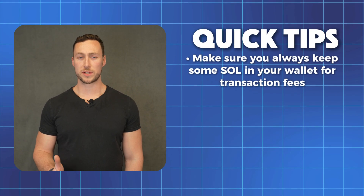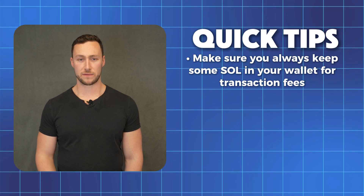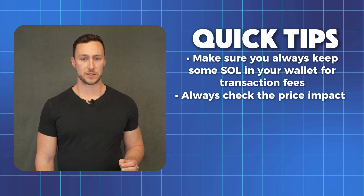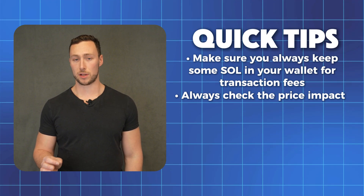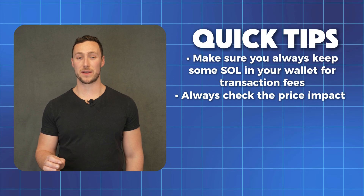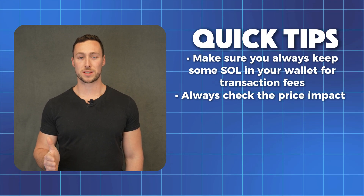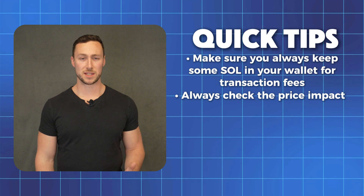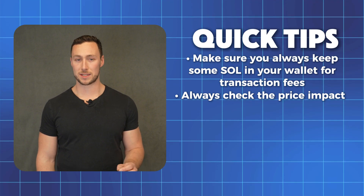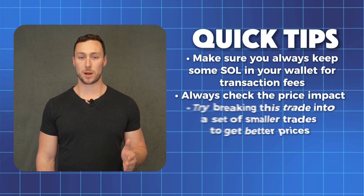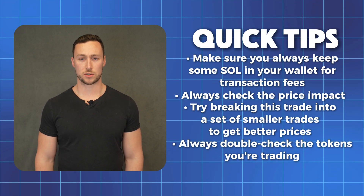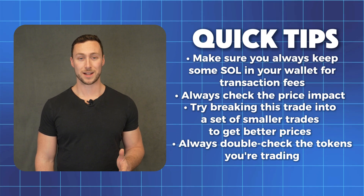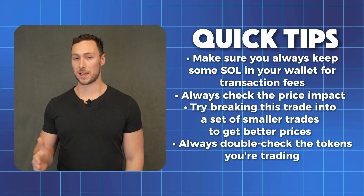Before we wrap up, here are some quick tips for smart swapping and to stay safe. Make sure you always keep some SOL in your wallet for transaction fees. Always check the price impact — if it's over 1%, you might want to trade a smaller amount. If you're trying to trade during a period of high volatility and your transaction keeps failing, you may need to go to swap settings and change your slippage setting to dynamic. Sometimes the amount you're receiving is much less than the amount you're paying — if this happens, try breaking the trade into smaller trades to get better prices. Always double check the tokens you're trading, as there can be fake versions out there. The contract address is unique, but the token ticker does not have to be.